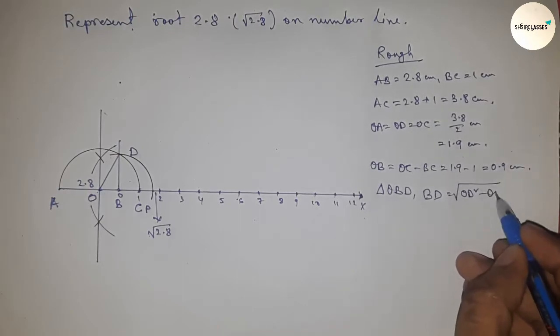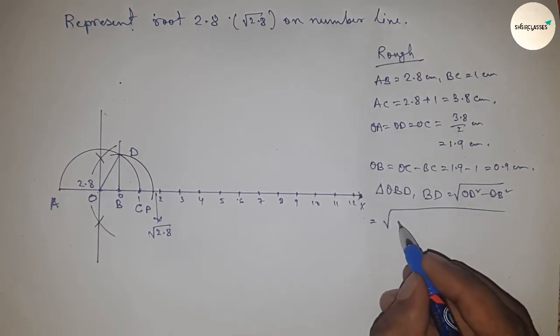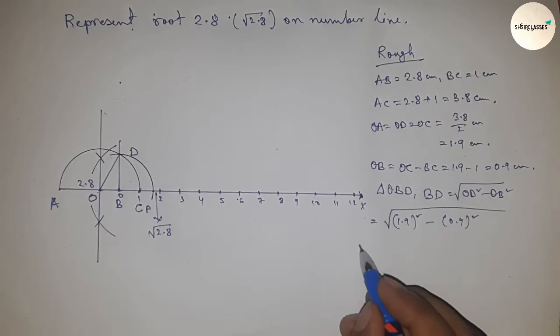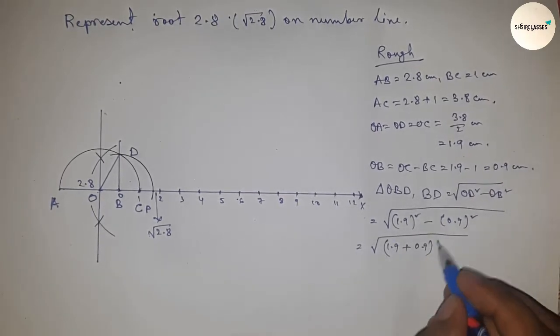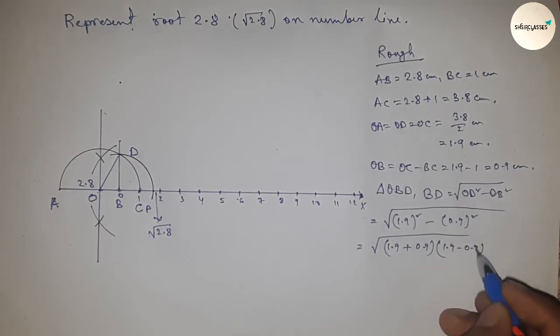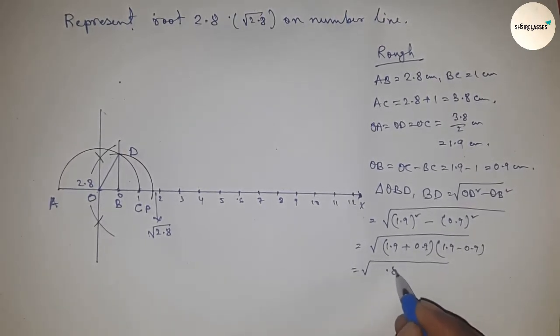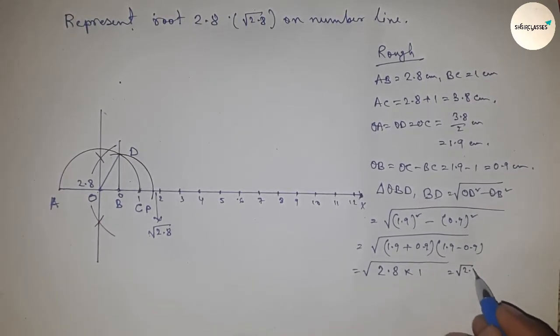From this formula, we get √((1.9+0.9)(1.9-0.9)) = √(2.8×1) = √2.8 cm. Therefore, the distances BD and BP are equal.